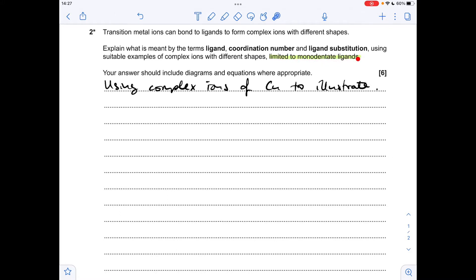And I've just highlighted a little reminder there, we've got to limit this to monodentate ligands. So I'm starting with this complex of copper. So this is CuCl₄²⁻. It's got a tetrahedral shape. The ligand is the chloride ion. And the coordination number, one, two, three, four coordinate bonds going to that central copper 2-plus ion.